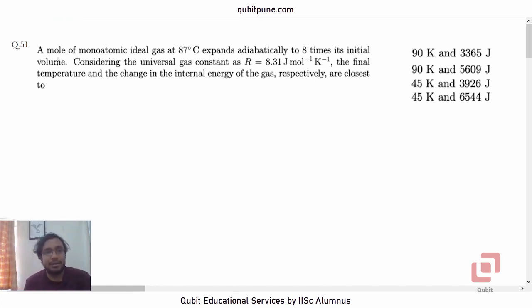A mole of monoatomic ideal gas at 87 degrees Celsius expands adiabatically to eight times its initial volume. Considering the universal gas constant as R = 8.31 joule per mole Kelvin, find the final temperature and the change in the internal energy of the gas respectively.